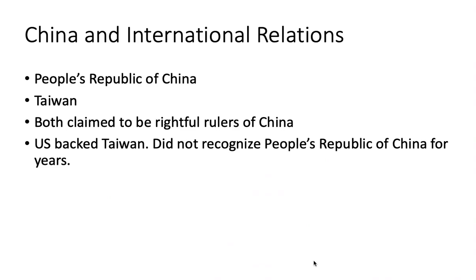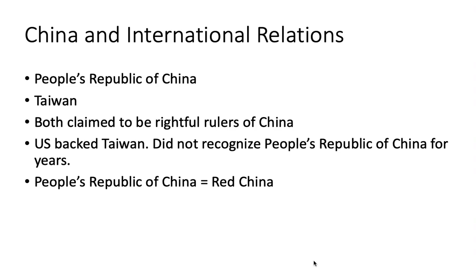For a long time, the United States only backed Taiwan and did not recognize the People's Republic of China. They did not recognize Mao Zedong and his government as the rightful government of the Chinese people, and instead referred to the People's Republic of China as Red China — red being the color associated with communism. Over the years, as relationships improved slightly, the United States did recognize the People's Republic of China, but also recognizes the government in Taiwan, recognizing them as two separate countries.